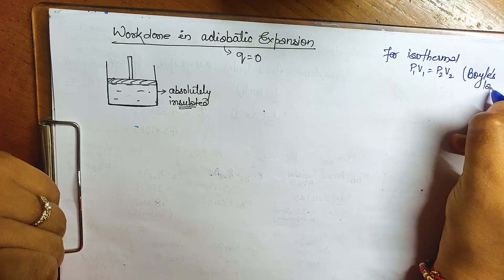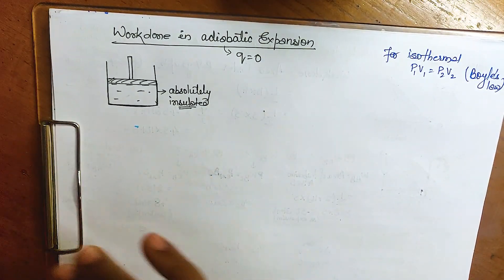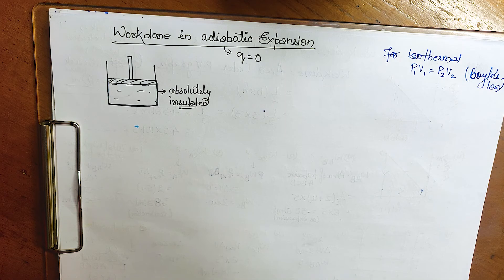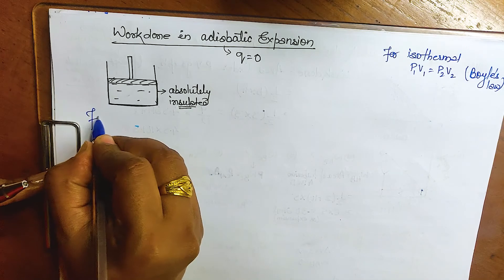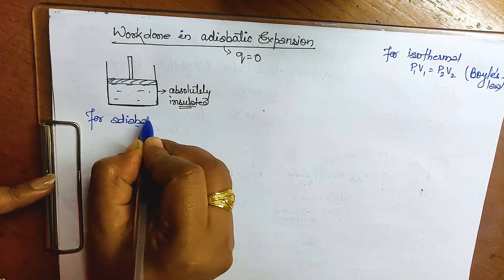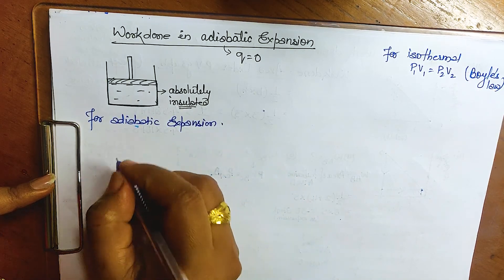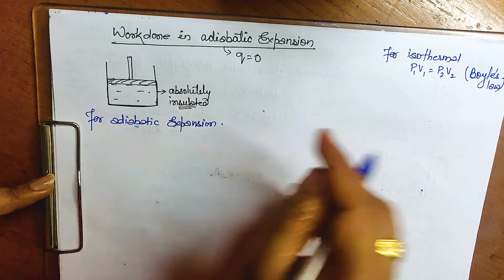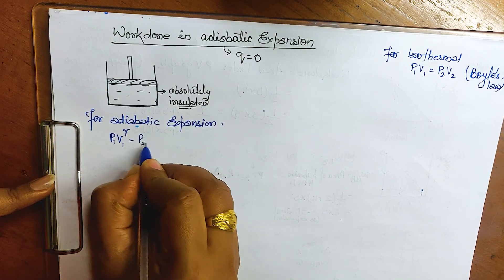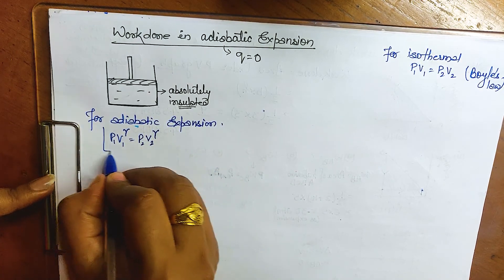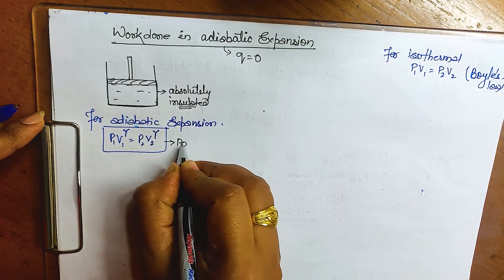For adiabatic, there is a similar formula but a little different — it is called Poisson's equation. For adiabatic expansion, instead of p1·v1 = p2·v2, we have p1·v1^γ = p2·v2^γ. This is called Poisson's law for adiabatic.